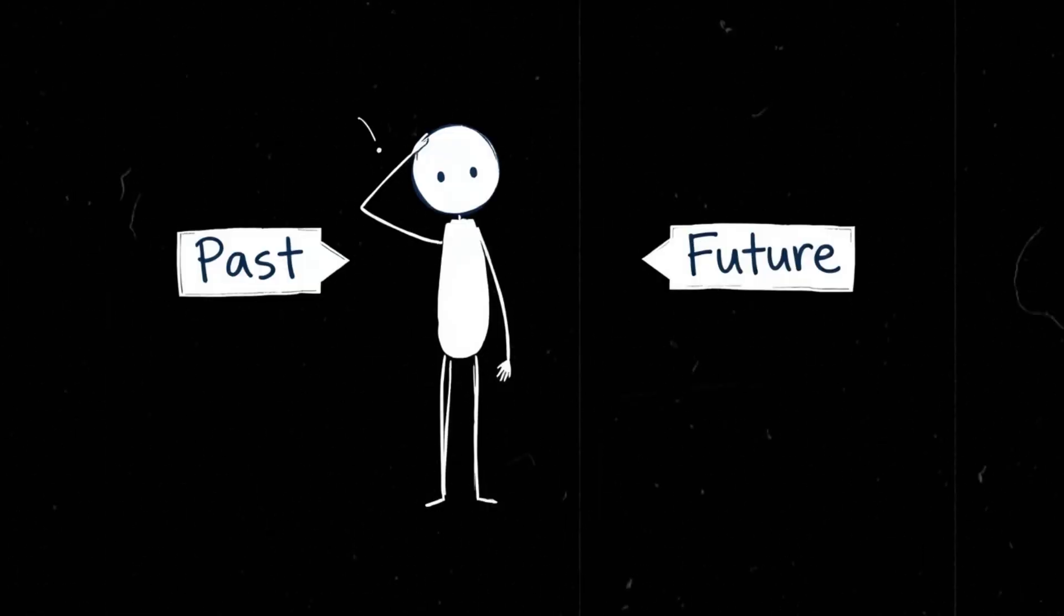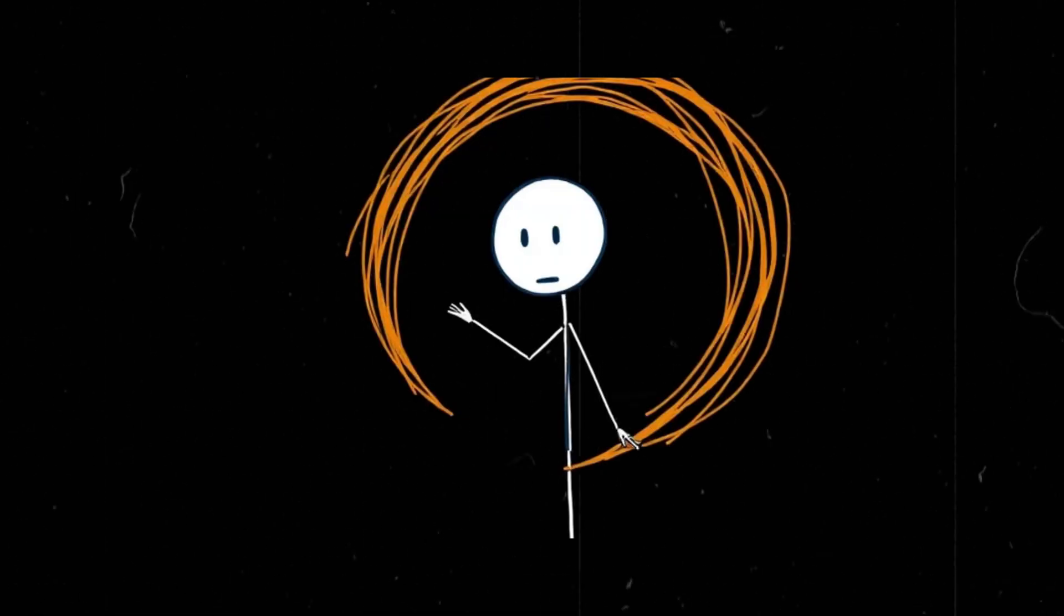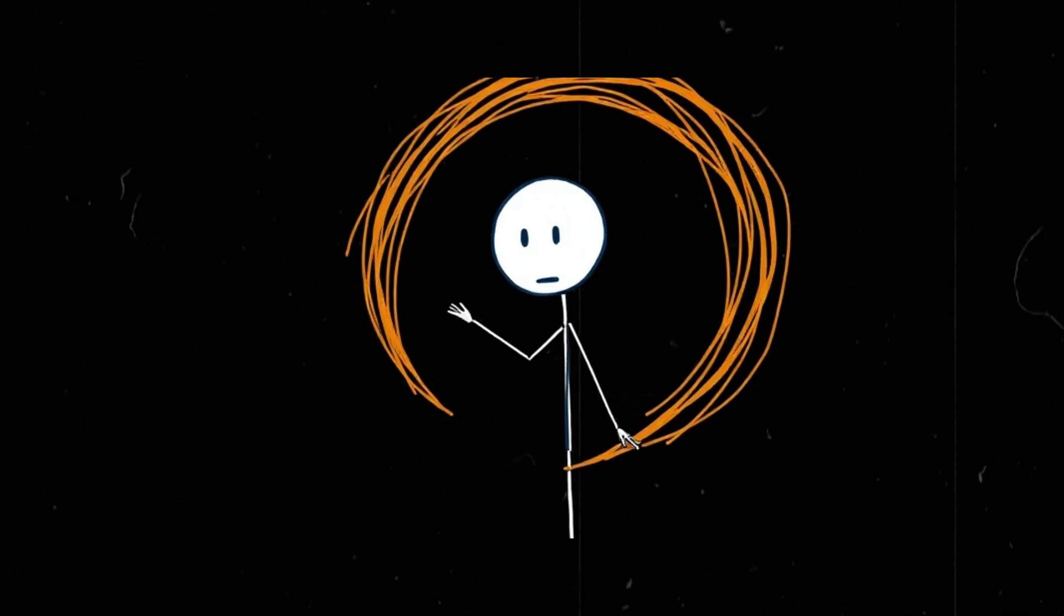But what about traveling to the past? That's where things get complicated. One idea? Wormholes. These hypothetical shortcuts through space-time could, in theory, connect two points, one in the present, one in the past. Step through one end, and congratulations. You're officially a time traveler.